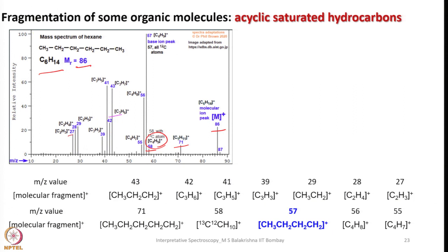Very nicely you can distinguish all these fragments and assign the correct mass to them. Starting from the loss of one methyl group giving 71, then 58, 57, 56, 55, 43, 42, 41 — up to 27 you can see a large number of fragments here, but it is very easy to interpret.